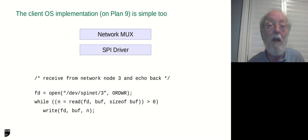So, if we want to send, say, read information from another node and echo it all back, we just open the SPINet device 3 for read and write, and we loop reading data and writing it back again. That's all there is to it.